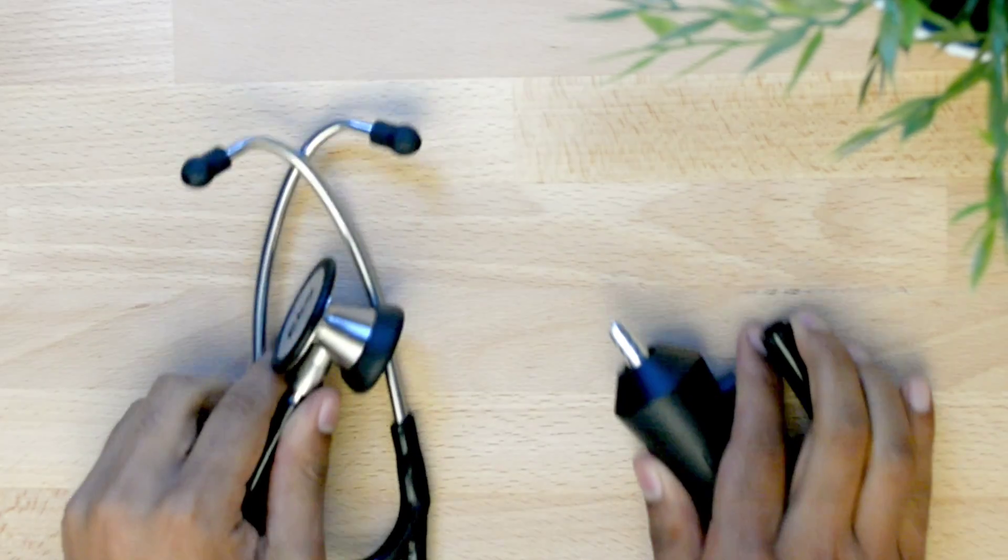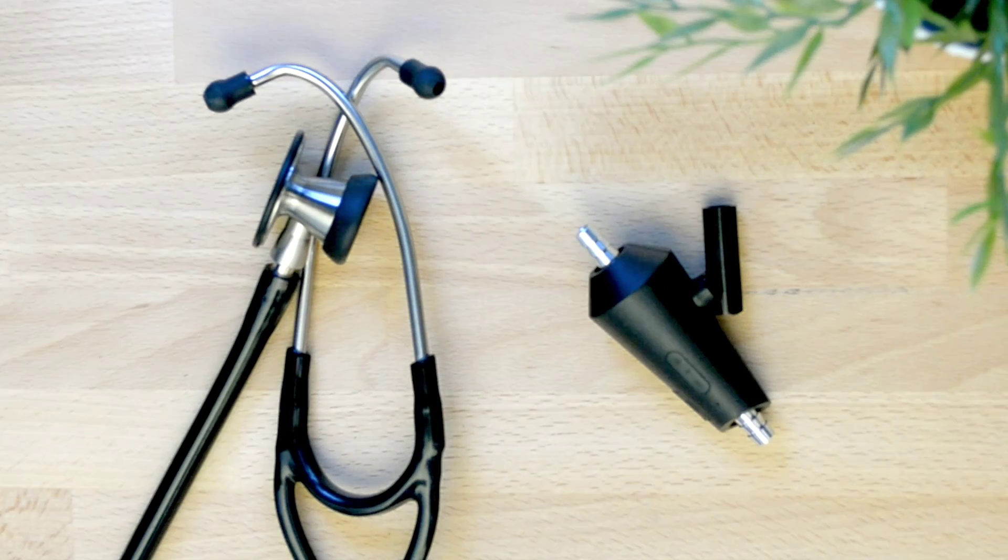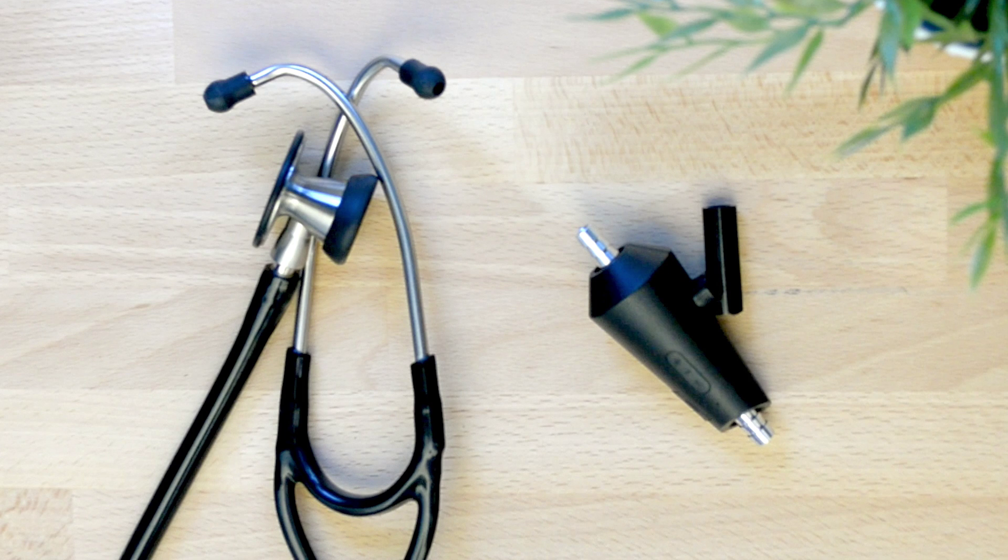Now let's attach the ECHO-Core to a large tube analog stethoscope. These steps are essentially the same, only here we will only be using the large adapter.